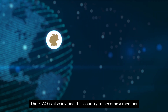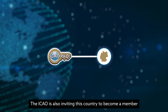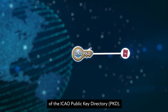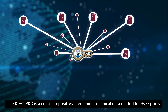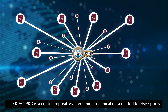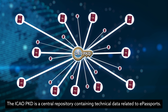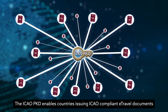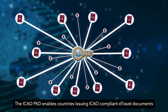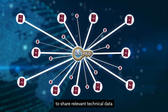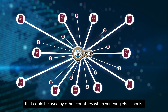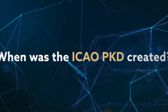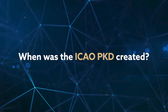The ICAO is also inviting countries to become a member of the ICAO Public Key Directory. The ICAO PKD is a central repository containing technical data related to e-passports. The ICAO PKD enables countries issuing ICAO-compliant e-travel documents to share relevant technical data that could be used by other countries when verifying e-passports.